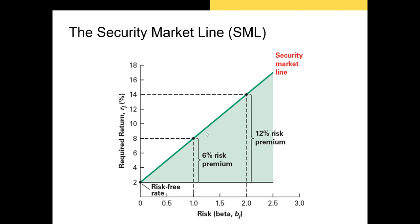The slope of the security market line equals the market risk premium — let's say 6%. If you want to know how much you're expected to earn on a specific stock, you just need to know that stock's beta and the risk-free rate. For example, a stock with a beta of around 1.5 would have a required return of about 10 to 10.5%.